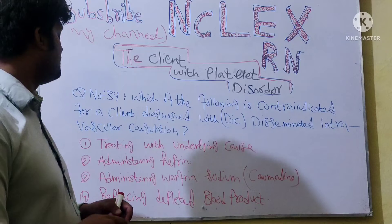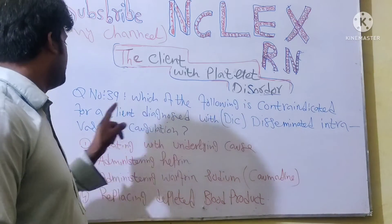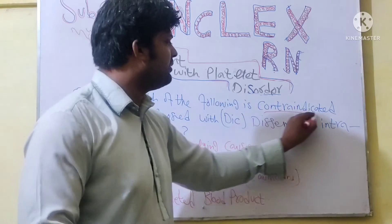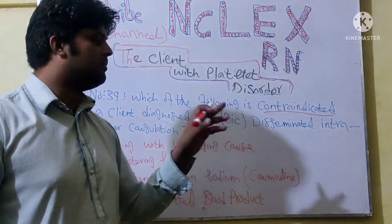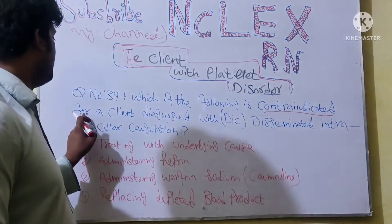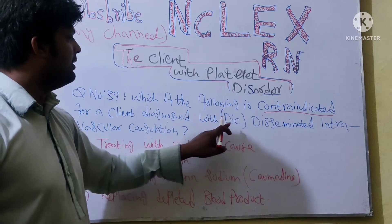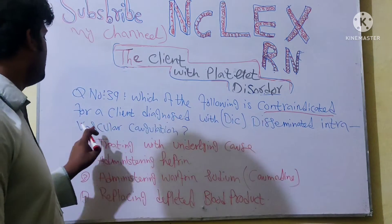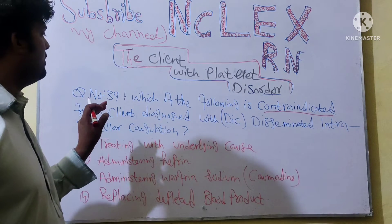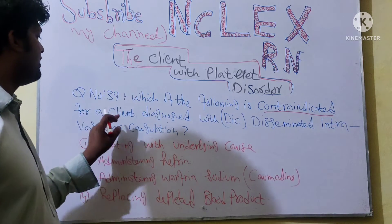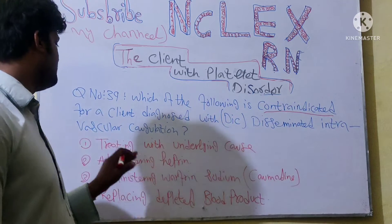So shall we start? Which of the following is contraindicated? 'Contraindicated' ka matlab hai — friends jin ko nahi pata, Urdu wale friends — contraindicated ka matlab hai 'mana karna', meaning 'not allowed.' Which of the following is contraindicated for a client diagnosed with DIC — disseminated intravascular coagulation?